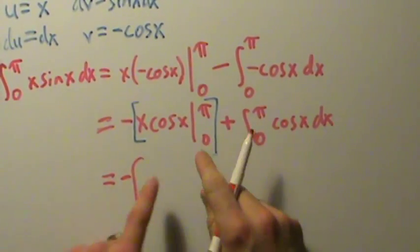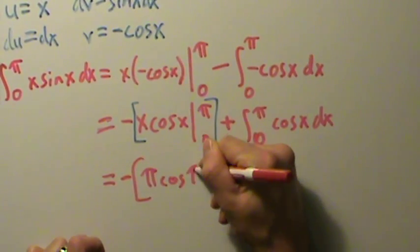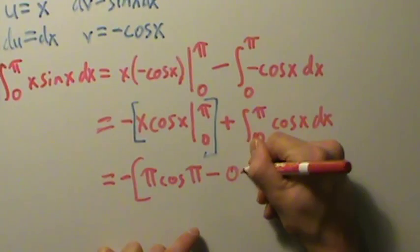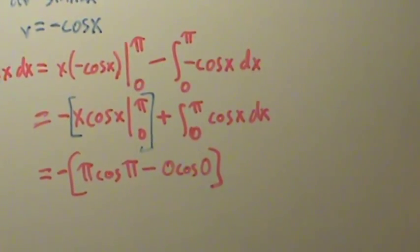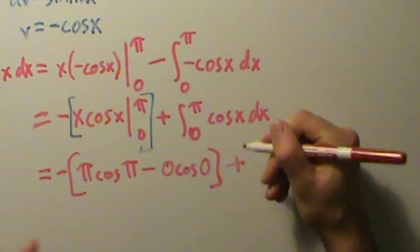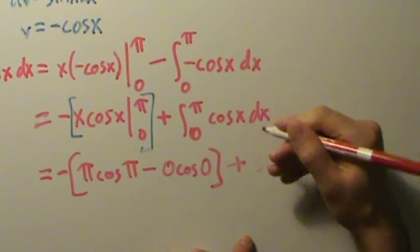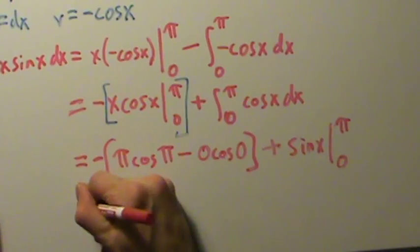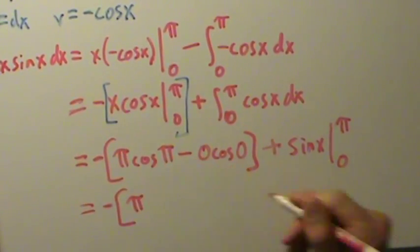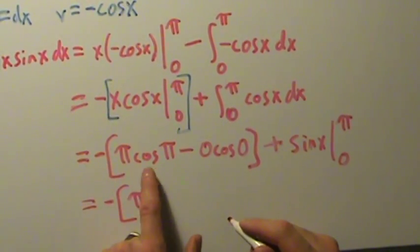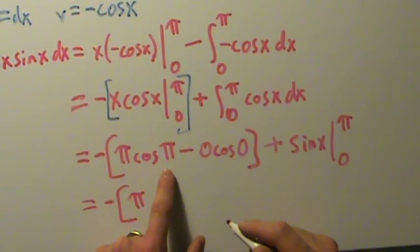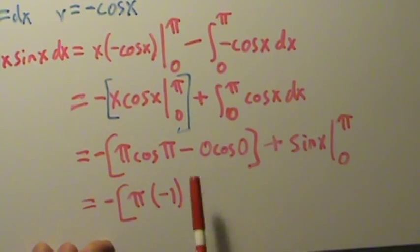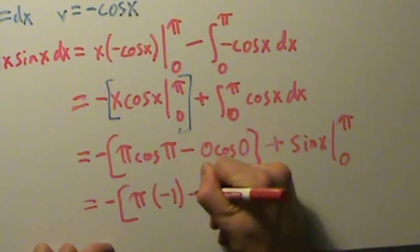So this is going to be minus: evaluate at the top — that's π times the cosine of π — then minus evaluating at the bottom, minus 0 times the cosine of 0. Cosine of π is negative one from the unit circle, since cosine is the x-coordinate and π is at (−1, 0). And cosine of zero is one, but it doesn't matter because it's multiplied by zero, so that whole term is zero.